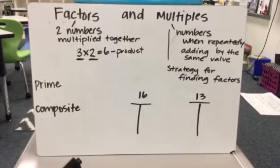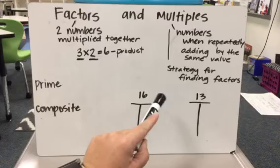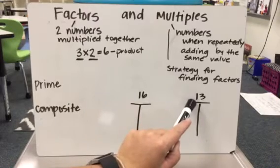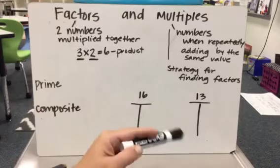So here we're going to practice finding the factors of 16 and the factors of 13. And we're going to notice something when we find their factors that they're a certain kind of number.